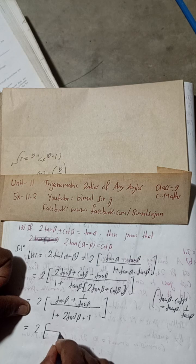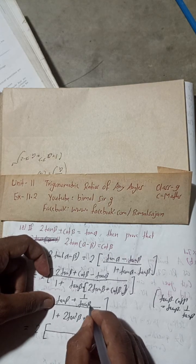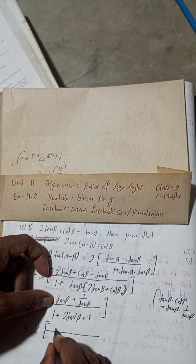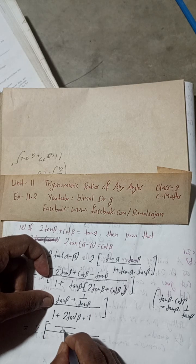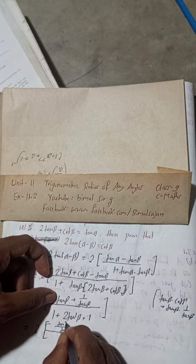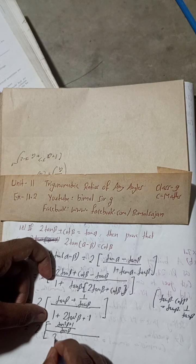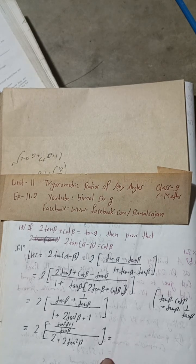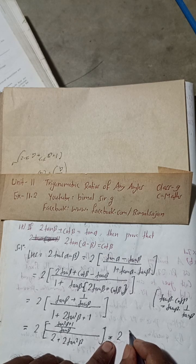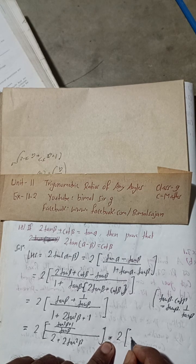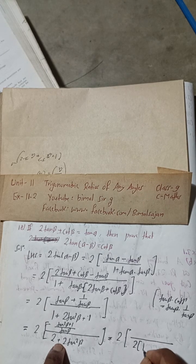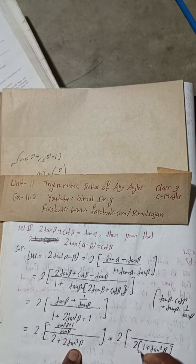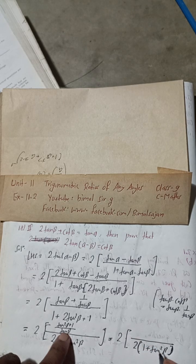So we now have: 2 × [tan β / (2 + 2·tan²β)]. Taking LCM and factoring, the denominator is 2·(1 + tan²β). The 2 in the numerator and the 2 in the denominator cancel, giving us: tan β / (1 + tan²β).